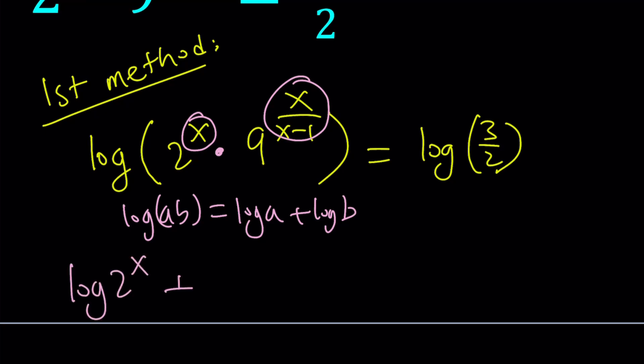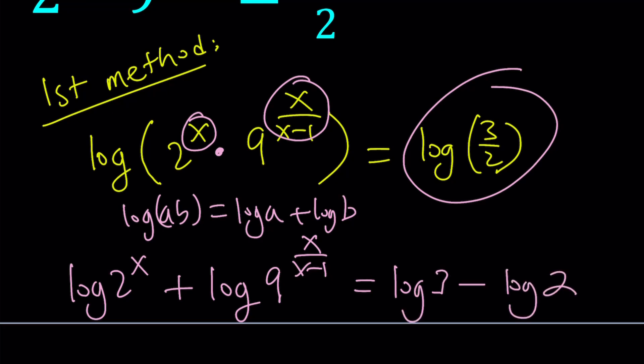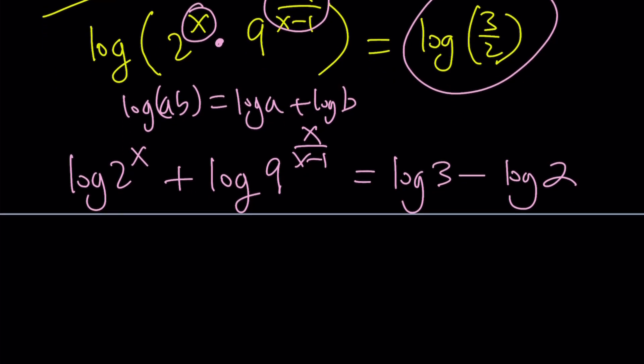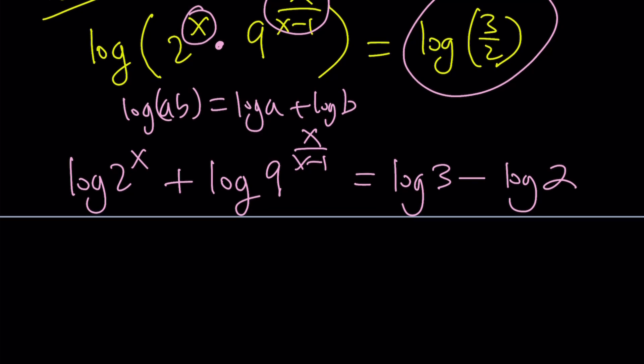Log 2 to the x plus log 9 to the power of x over x minus 1 equals. And here we have a quotient so that can be written as log 3 minus log 2. It's just similar to the product. It's just the minus sign because dividing is basically multiplying by the reciprocal. So if you know the product rule you can easily prove the quotient.